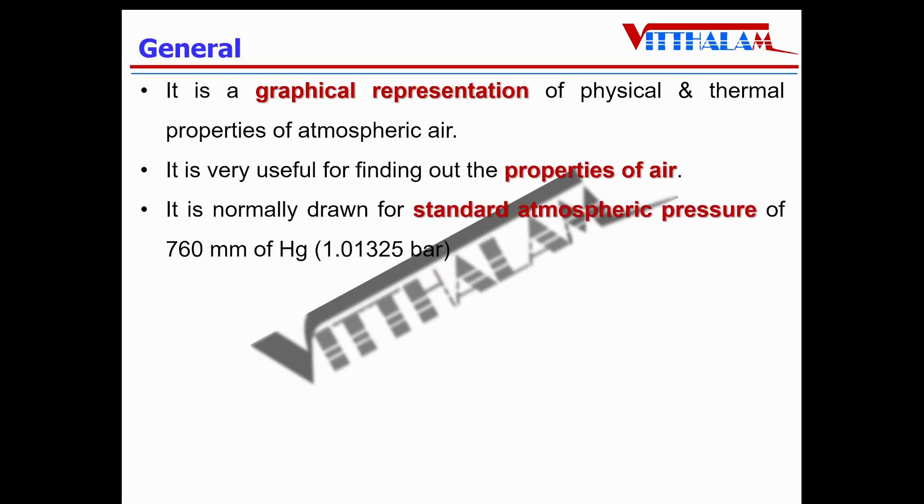Psychrometric charts are available in various pressures and temperature ranges, but normally drawn at standard atmospheric pressure of 760 mm of Hg equivalent to 1.01325 bar.